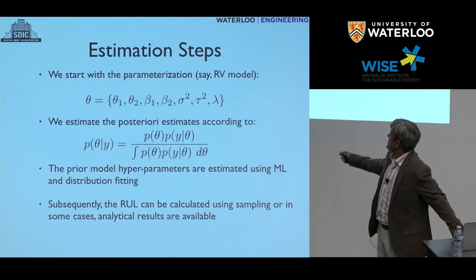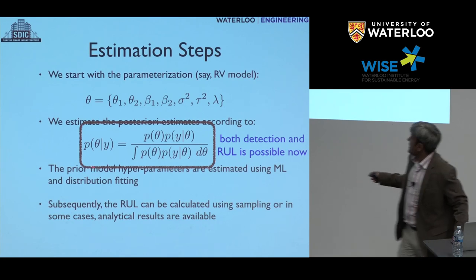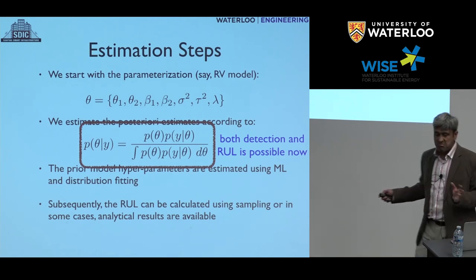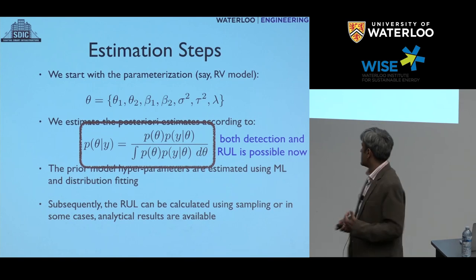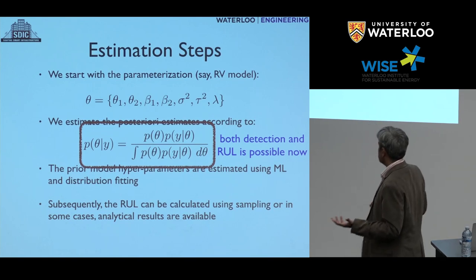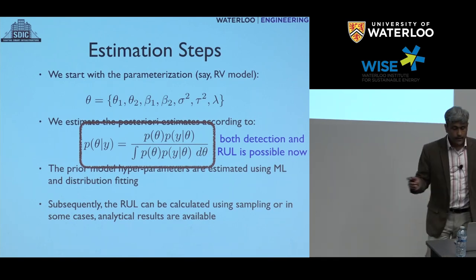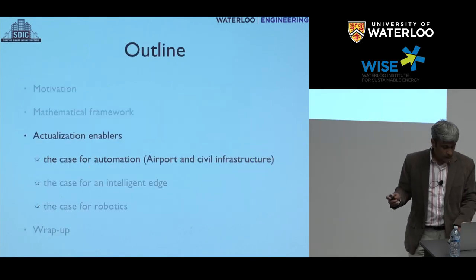This is common sense, but you can show it mathematically. When you're measuring very early on, all estimates are driven by the priors — the prior knowledge. As you go closer and closer to its end of life, they're driven more by the estimates you're actually getting from the data, meaning the data is better informing your estimates on remaining useful life than just your priors. The estimation steps are simple: parameterize the system, calculate posteriors using standard Bayesian methods, and estimate parameters using maximum likelihood or distribution fitting. Once you have the remaining useful life, your problem is essentially solved.